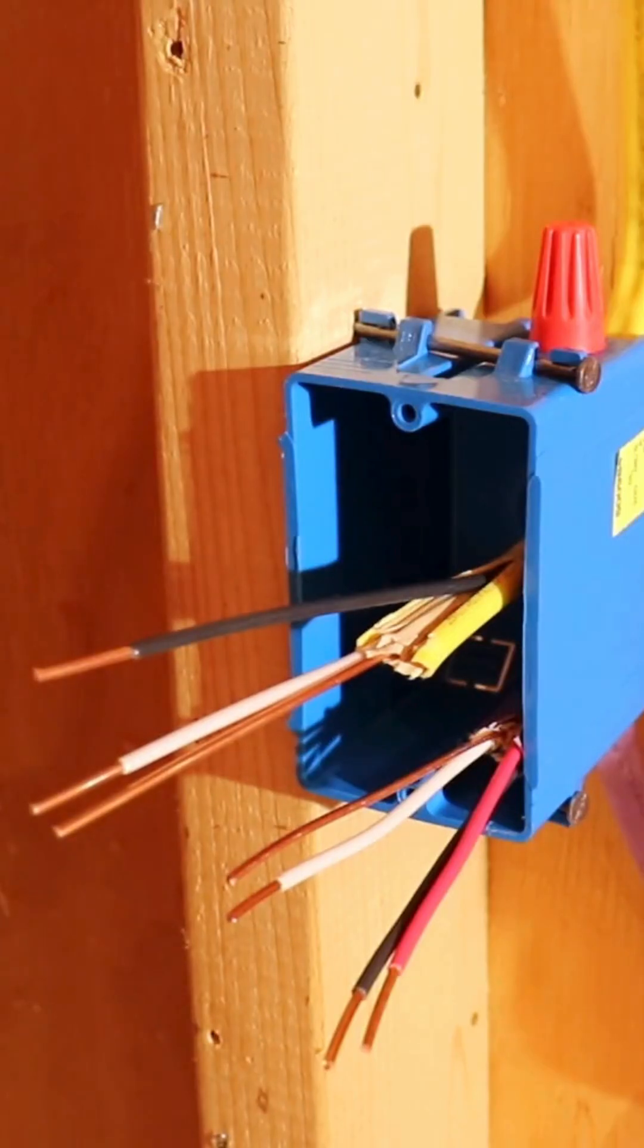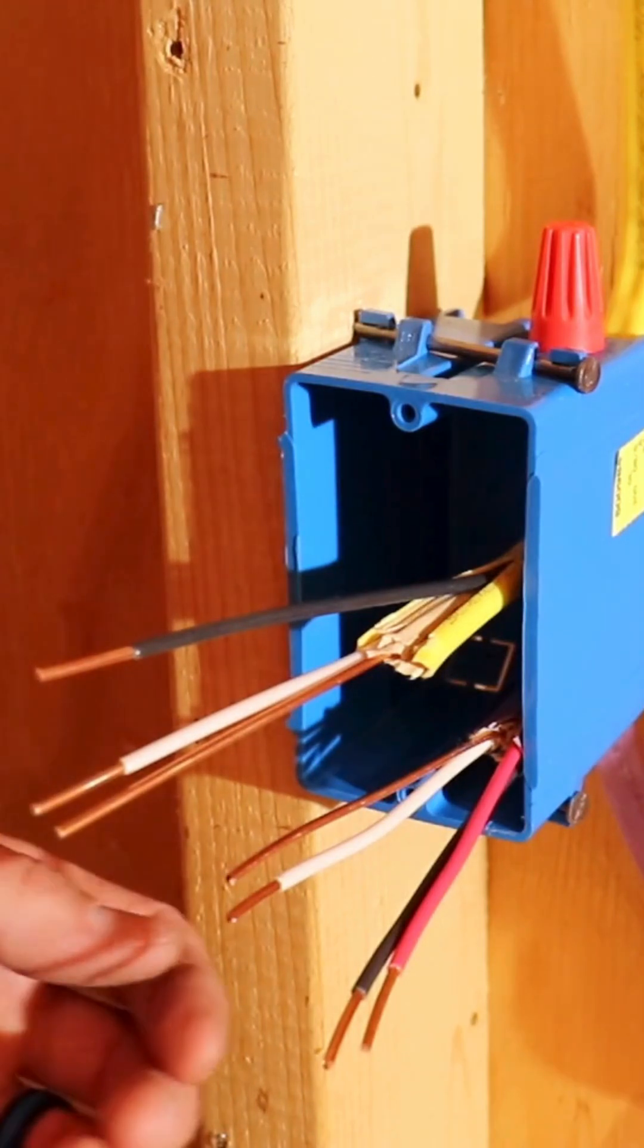At the second box, we have our 12-3 coming in from our first box and we have a 12-2 with ground going out of the box to the light fixture.